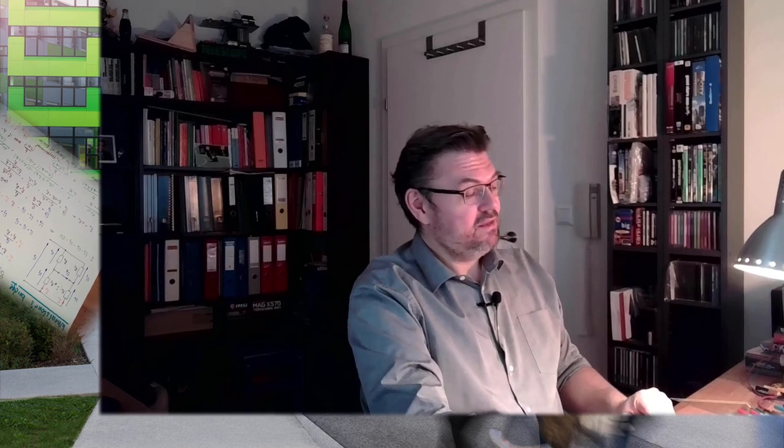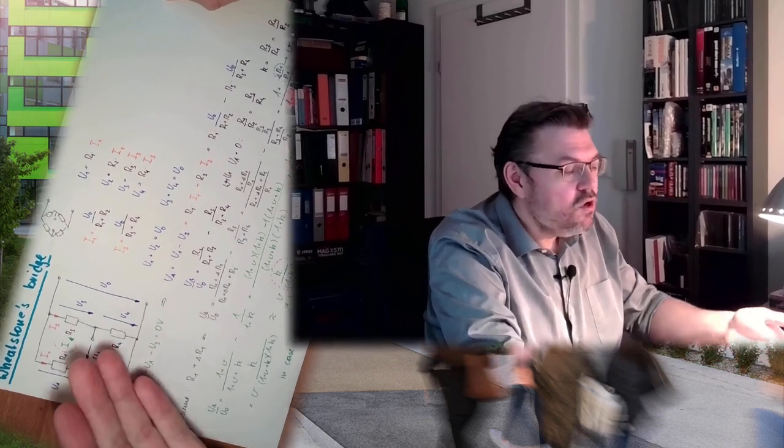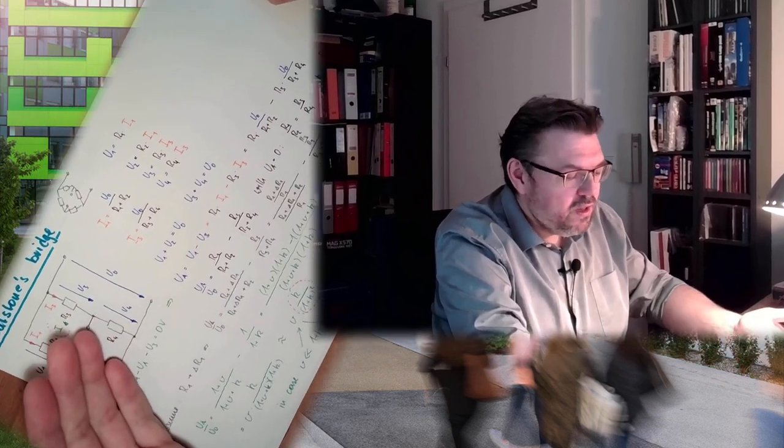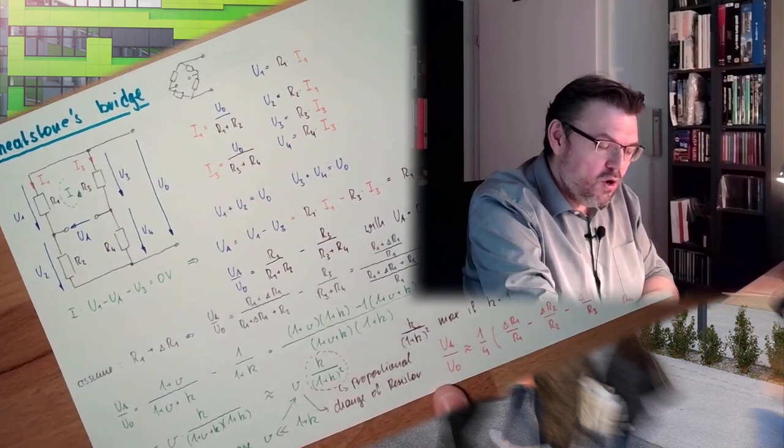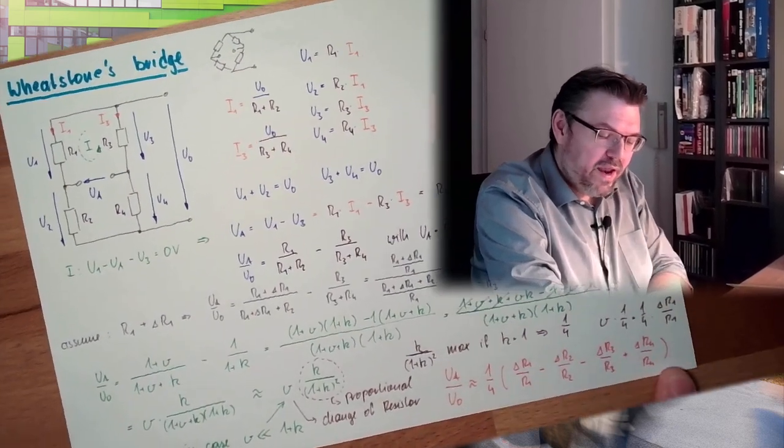Last time we talked about the Wheatstone bridge for measuring differences in resistance. These were our findings. We had a little Wheatstone bridge — usually it's drawn like this, but I've drawn it like this to show the calculation. We derived the formula which we ended up with here.